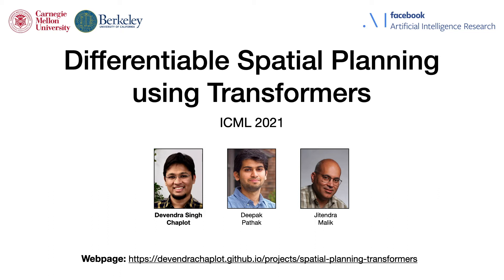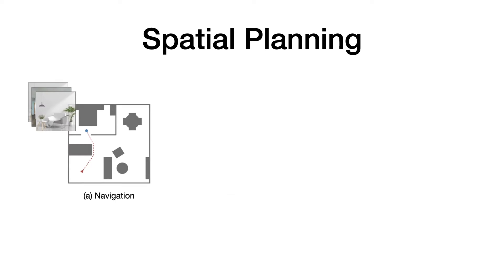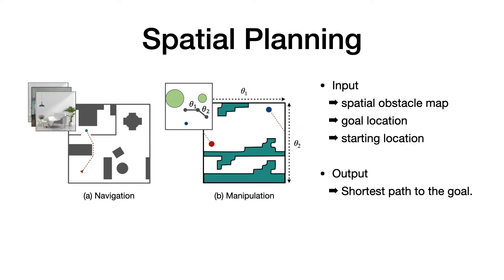Hi everyone, my name is Devendra and I'm going to talk about our ICML 2021 paper on differentiable spatial planning using transformers. The problem of spatial planning involves finding the shortest path to a goal location from a starting location given an obstacle map.